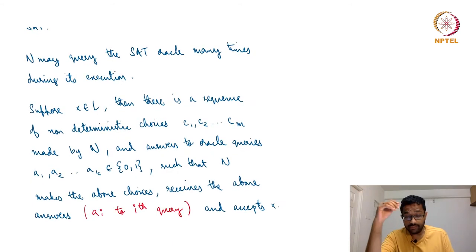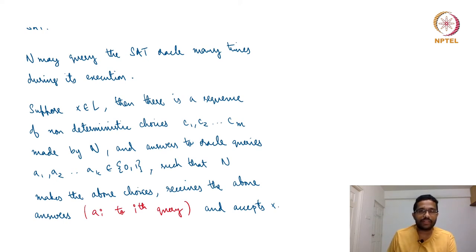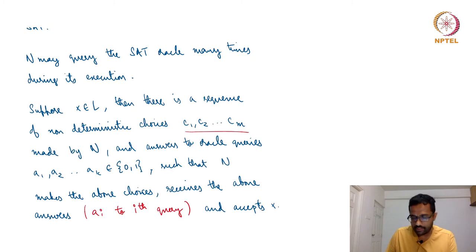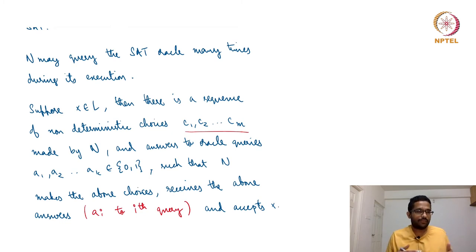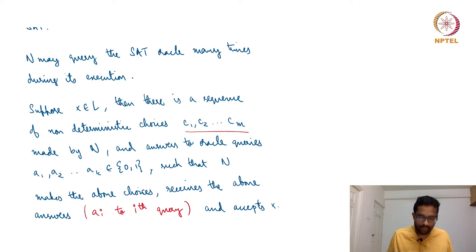Suppose X is in L. Since N is non-deterministic, there is one sequence of choices C_1 through C_m that leads to X being accepted. It will be a fixed number of choices for a fixed input. In this process, N also has access to the SAT oracle and may make K queries to the SAT oracle, where K is another fixed number. Let the responses to the K queries be A_1 through A_K — yes/no responses, viewed as 0/1.